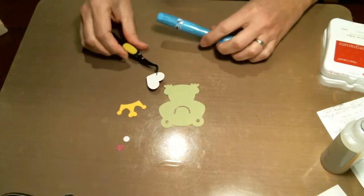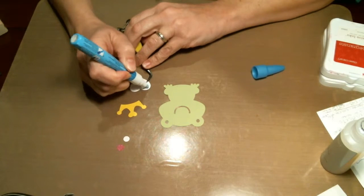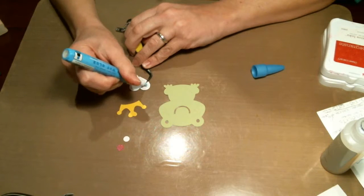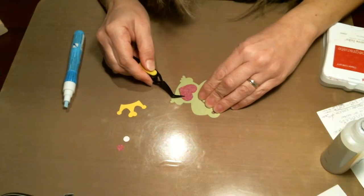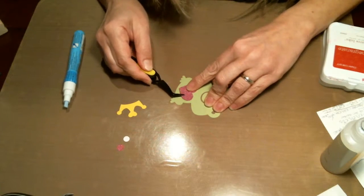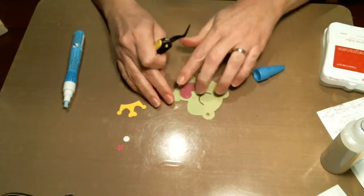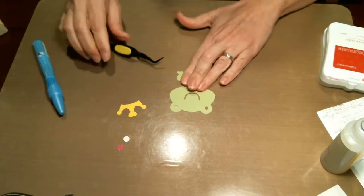First, I'm going to take my Zig two-way glue pen and glue the heart to his belly before I start coloring. On the little froggy, there's little cut marks to show exactly where to line up the heart so you can get it centered perfectly on the body.